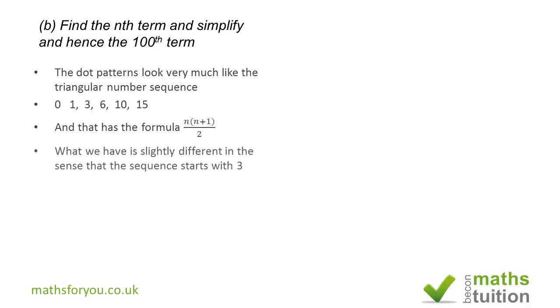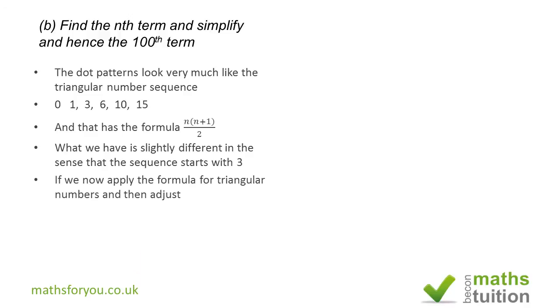Now what you notice from what's been given to us, we've got 3, 6, 10, 15, so in effect that there is triangular number, truncated, because they miss out the 1 and the 0. So why not use what we already know? We know that n(n+1)/2 will give us triangular numbers, the formula for triangular numbers.